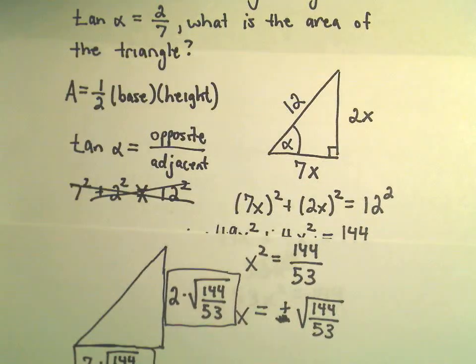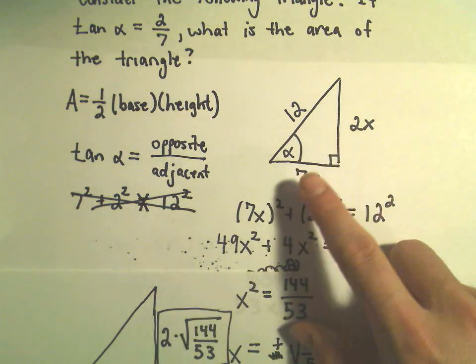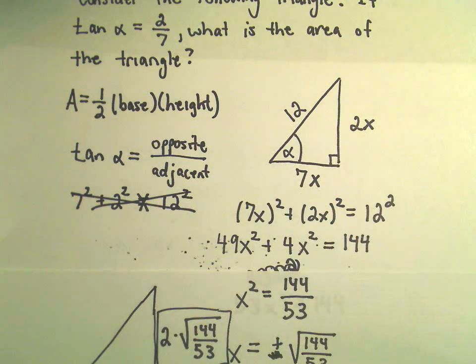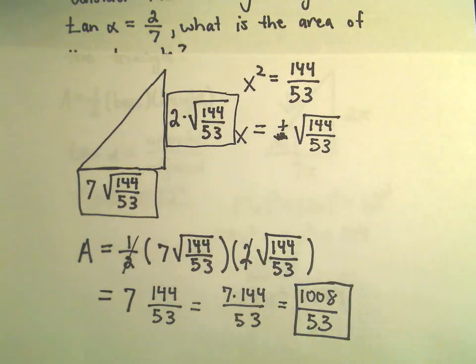So, I think, again, kind of the main thing you've got to be careful about is just, you know, not just labeling things with 2 and 7. You've got to use this 2x, 7x, solve for x, and then use those resulting values to actually find the area of the triangle.